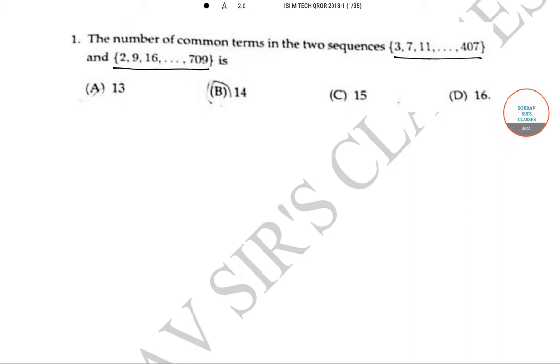The general term for the first series is 3 + 4k, and the general term for the second sequence is 2 + 7l. From this we get 7l = 4k + 1. Now if l is even, this equation won't be possible.